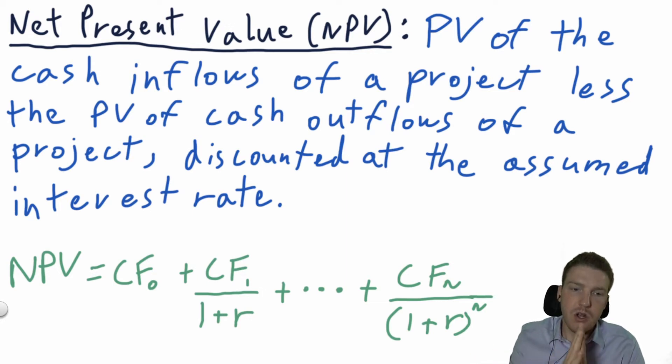We have a formula: NPV equals cash flow at time zero plus cash flow at time one divided by one plus interest rate, and then however many cash flows in between, all the way out to n, which is the last period. Cash flow at time zero is not discounted at all because it's happening right away.